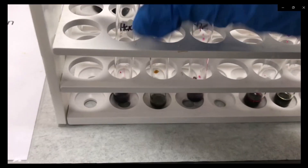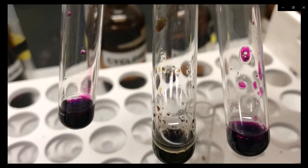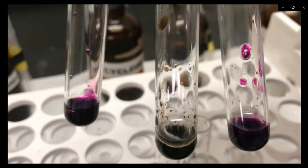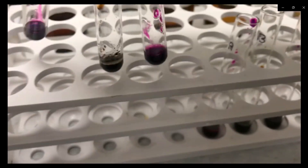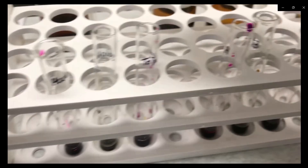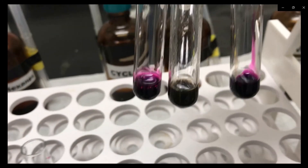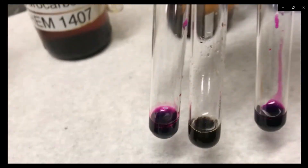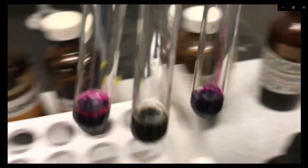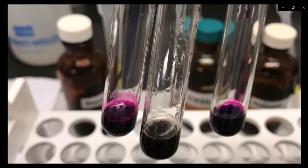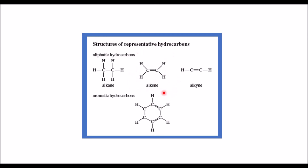A positive test for an unsaturated compound is a change in color from purple to brown. The cyclohexene tube changed to brown, and unknown B also changed to brown, confirming the presence of an alkene. These results confirm that bromine and potassium permanganate readily react with an alkene or unsaturated hydrocarbon, but not with an alkane or aromatic hydrocarbon.